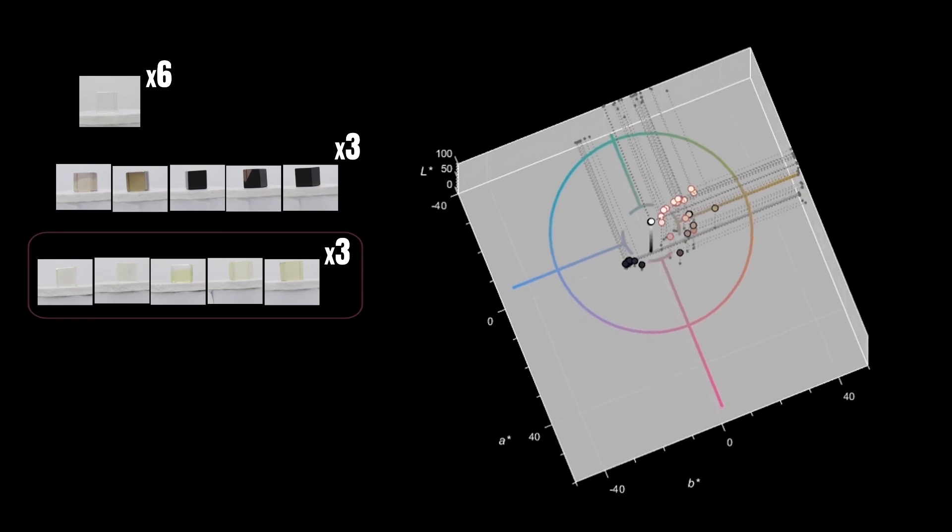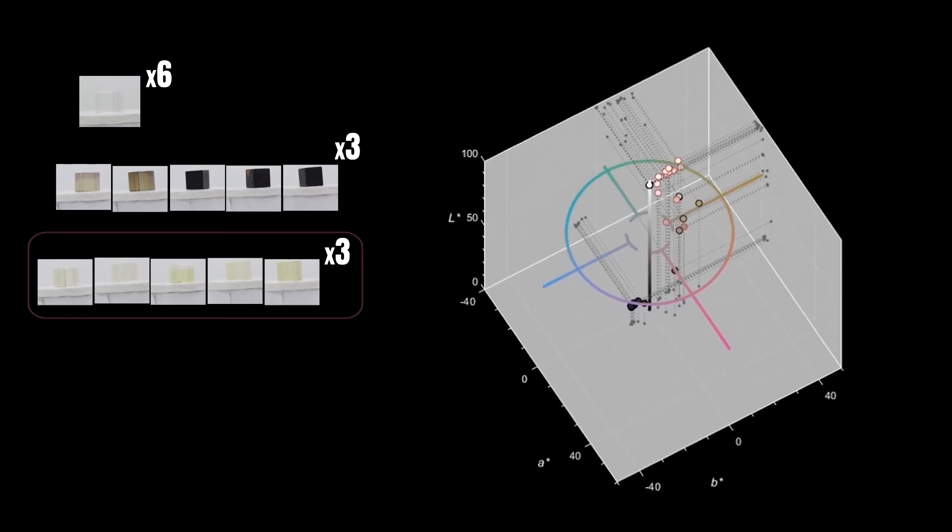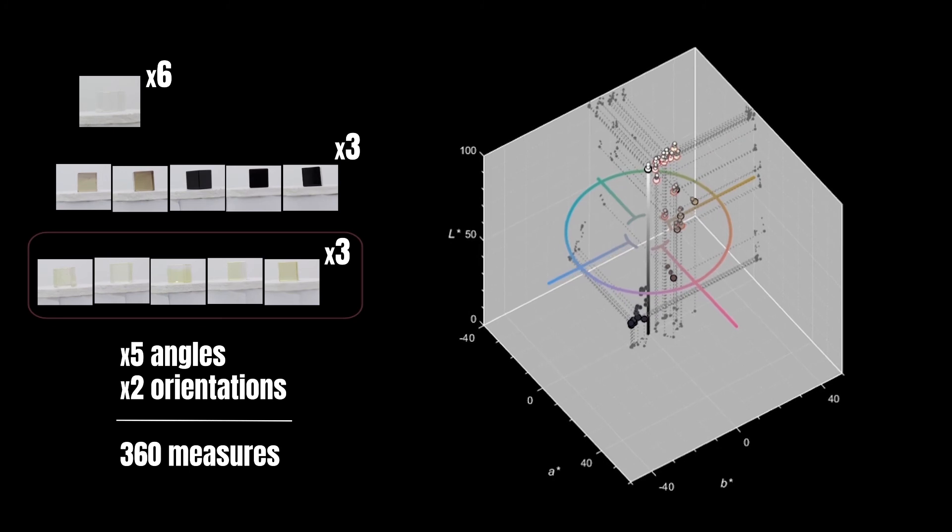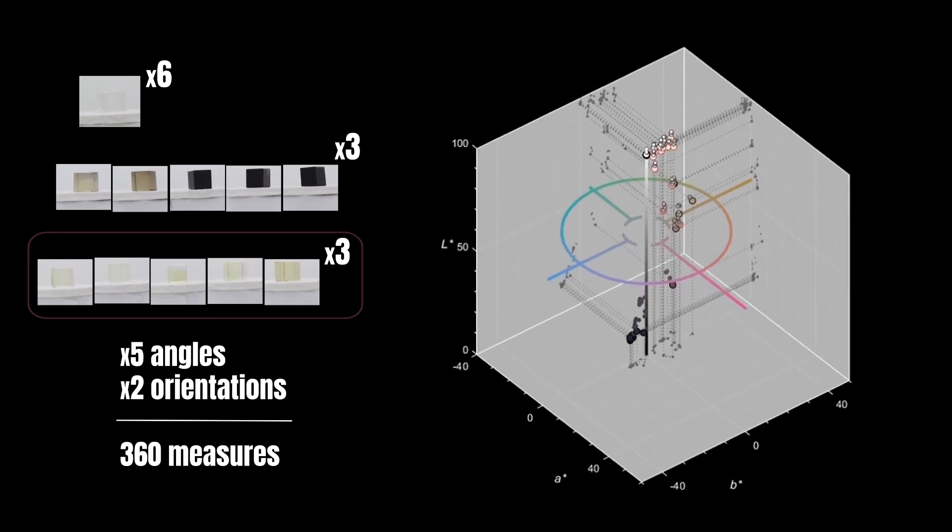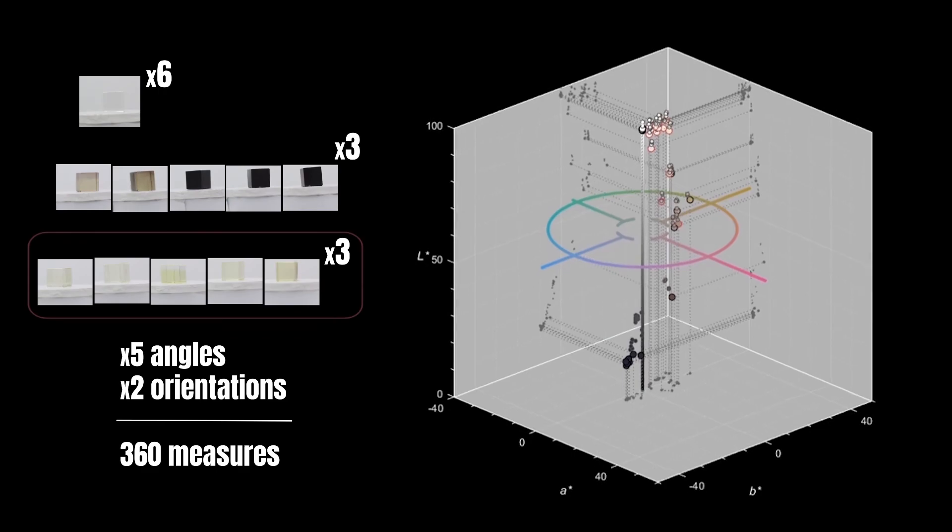We also measure for different deviation angles from the frontal view, in which the contribution of additional reflected light causes lighter and less saturated colors.